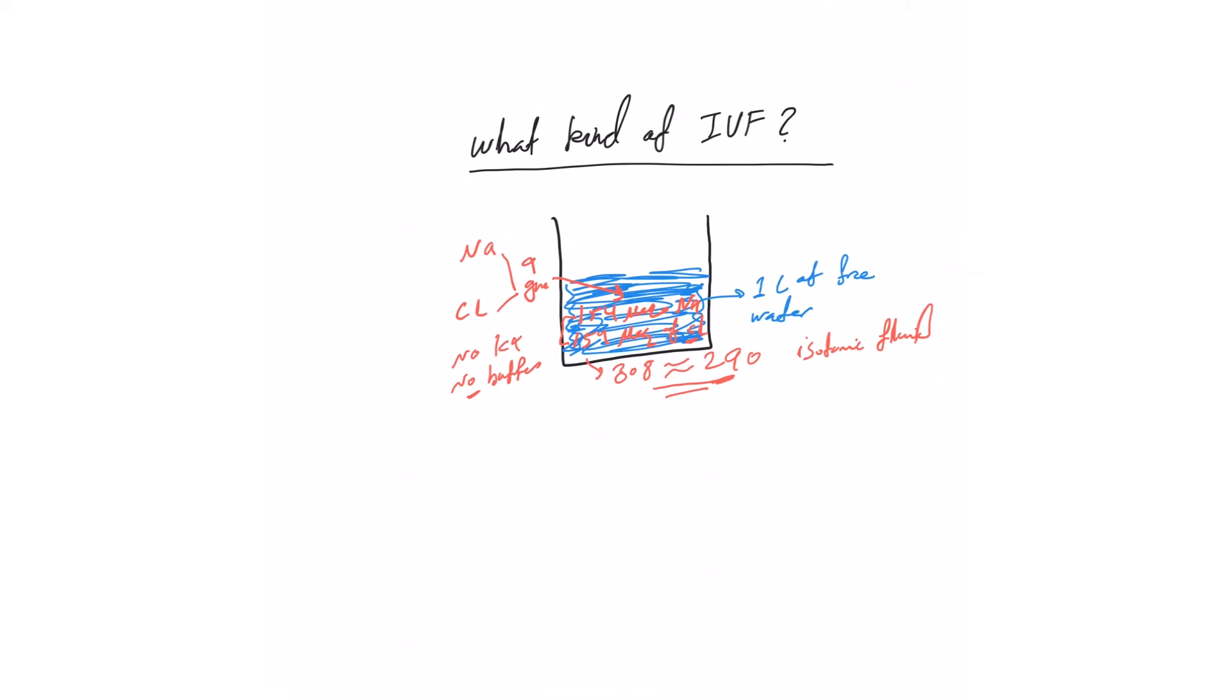Because the tonicity is similar to the body, the amount of free water—when we say free water, that doesn't have any osmotically active agents—is almost equal to zero or very minimal in this normal saline.